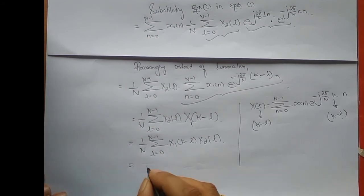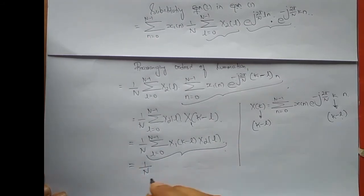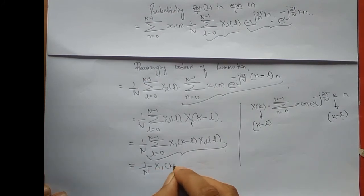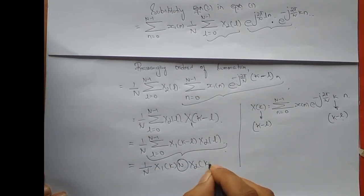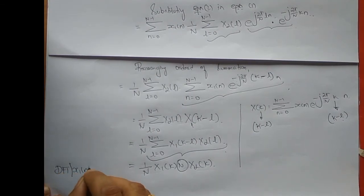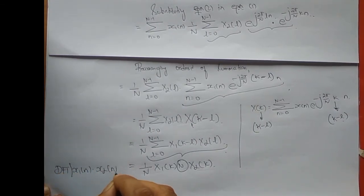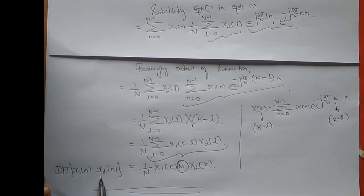This equation in short can be written as X1(k) N-point circularly convolved with X2(k), scaled by 1/N. The left-hand side is DFT of x1(n) · x2(n). So multiplication in the time domain is equal to circular convolution in the frequency domain.